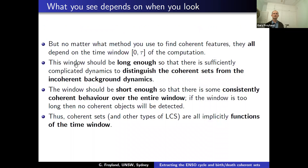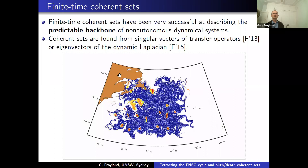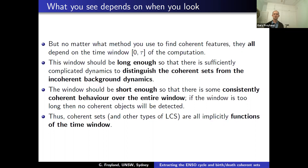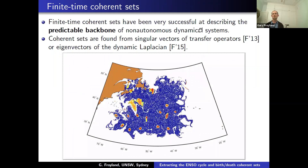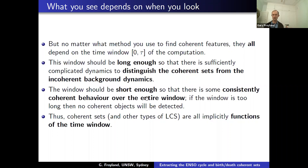All methods for finding coherent sets depend on the time window. The window should be long enough that there's sufficiently complicated dynamics to distinguish coherent from incoherent behavior — if the flow time is too short, everything looks coherent. But the flow time should be short enough that there's consistent coherent behavior over the whole window; choosing a very long time might eliminate all coherent behavior as eddies dissipate. All types of Lagrangian coherent structures are implicitly functions of the time window, though this isn't always explicitly stated.